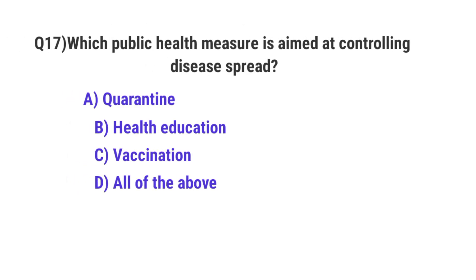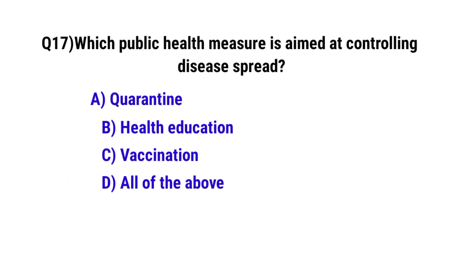Question number 17. Which public health measure might be aimed at controlling disease spread? The correct option is D: all of the above.